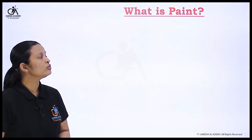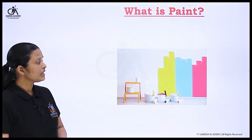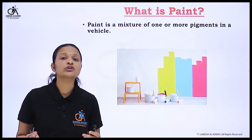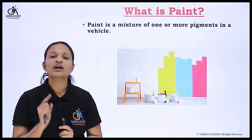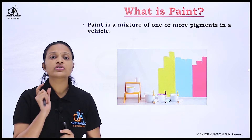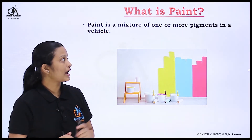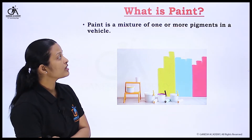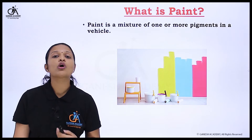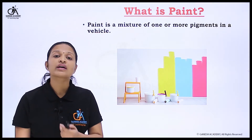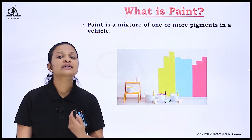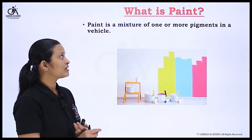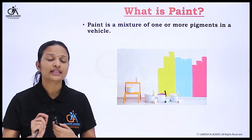First of all, what is paint? Paint is basically a mixture of one or more pigments in a vehicle. Pigment is one of the important ingredients or constituents of paint — it is a solid substance that forms the main body of paint. Vehicle is a liquid substance, or oil, which helps to form the film or layer of paint. These are the two important constituents of paint: pigment and vehicle.